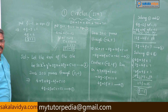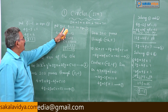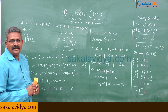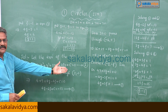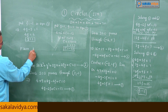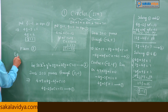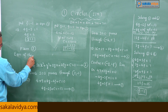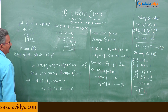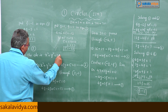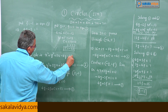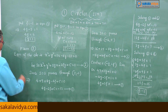The required values are g = 1, f = -1, and c = -23. Substituting into the general circle equation, the required equation of the circle is x² + y² + 2x - 2y - 23 = 0. This is the answer.